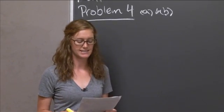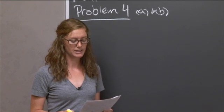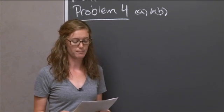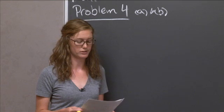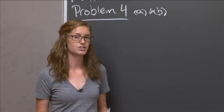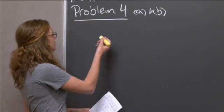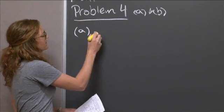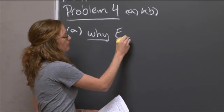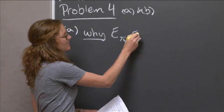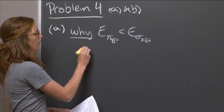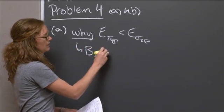Boron exists in the gas state as the dimer B₂. Explain how the fact that B₂ is paramagnetic with two unpaired electrons implies that in this molecule the π₂p orbitals must lie at a lower energy than the σ₂p.